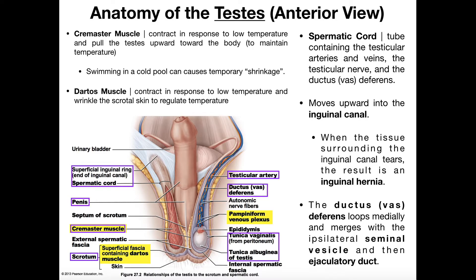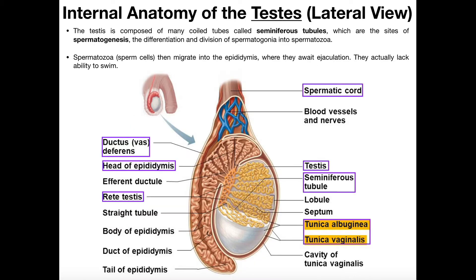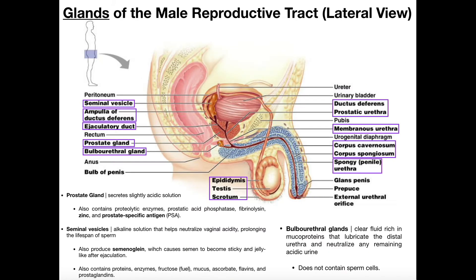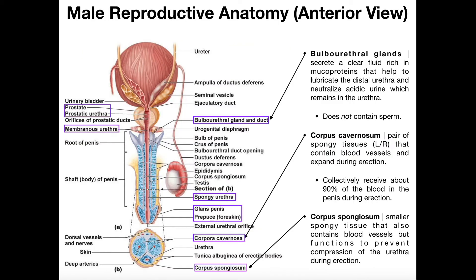In the previous video, we talked about the anatomy of the testes, but we didn't get much past that. We discussed the testes, the membranes that surround them, muscles that interact with them, the seminiferous tubules, the epididymis, and the beginning of the ductus deferens or vas deferens. We're going to continue with some more relevant anatomy here, and one of the major things I want to focus on are the glands of the male reproductive tract. We'll begin by looking at a lateral view, and then take a look at an anterior view.